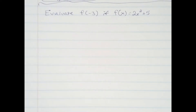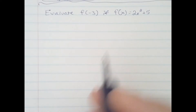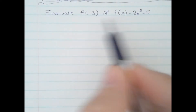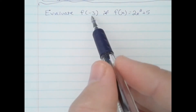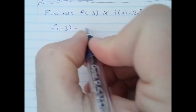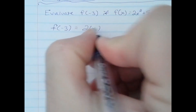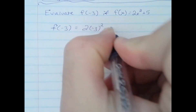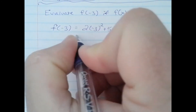This is an example of a very simple function evaluation. Our function is 2x squared plus 5, and we're evaluating for f of negative 3. Very simply, rewrite the function, put in parentheses, put a negative 3, and then follow your order of operations.